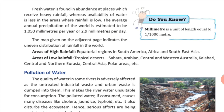Fresh water is found in abundance in some areas that receive heavy rainfall, whereas availability of water is less in areas of low rainfall. For example, equatorial regions in South America, Africa, and Southeast Asia receive more rainfall. Whereas tropical deserts like the Sahara, Arabian, Central and Western Australia, and Central and Northern Eurasia get scanty rainfall — hence, there is less water in these regions.